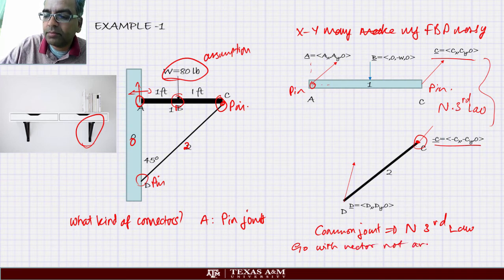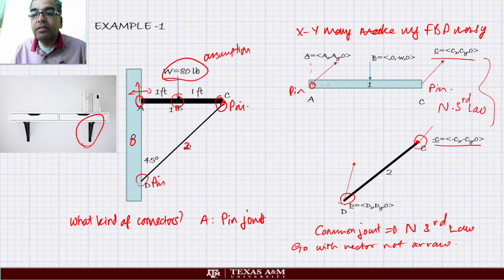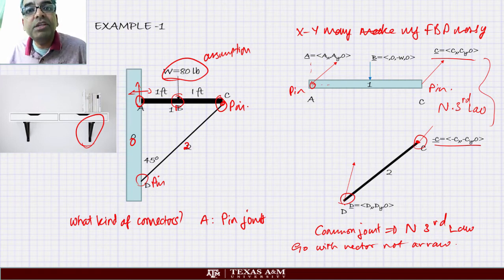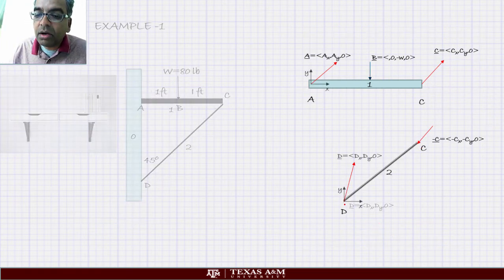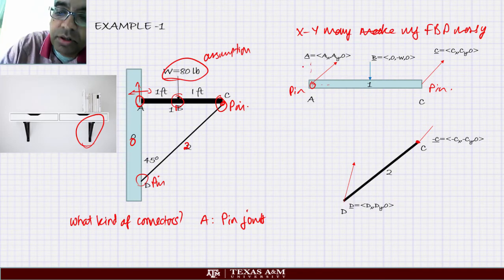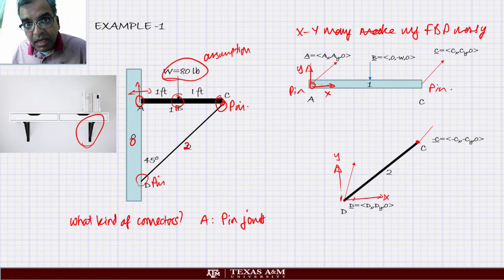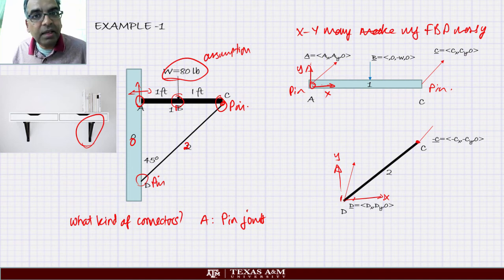At D there is another pin joint and the components are DX, DY, 0. This is how we draw our free body diagrams. Once we have drawn the free body diagrams I am going to write down the equations of equilibrium for each of them. I will put my Y axis and X axis reference for each free body. For each of the free bodies I am going to have three equations, giving six equations total.